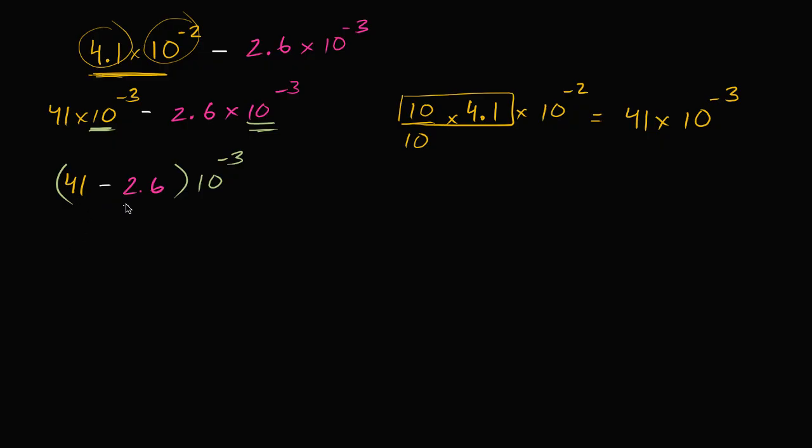Now what's 41 minus 2.6? Well 41 minus 2 is 39. And then minus 0.6 is going to be 38.4. And then you're going to have times 10 to the negative 3rd power.